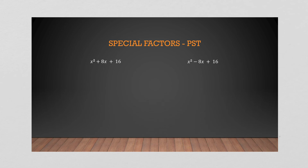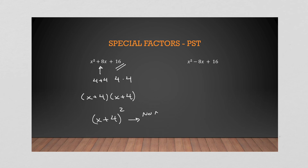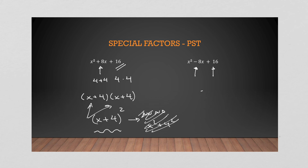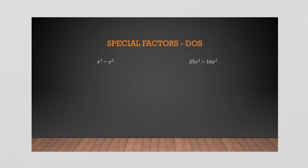Special factors: Perfect Square Trinomials. When you see a number like 4×4 for c, and 4+4 for the middle, you get a PST and can write it as (x+4)². Be careful — this does NOT mean x² + 4², that is not true. It means the same binomial multiplied by itself. If the middle term is negative and c is positive, both numbers are negative: (x-4)². You don't have to identify PSTs immediately — your regular trick will still work; you'll just happen to get the same number twice.